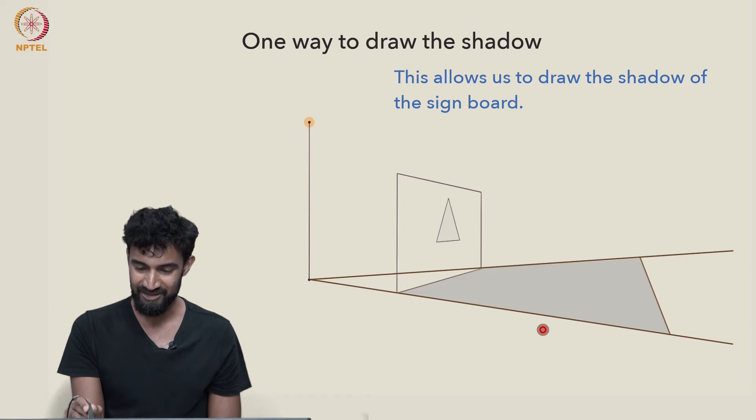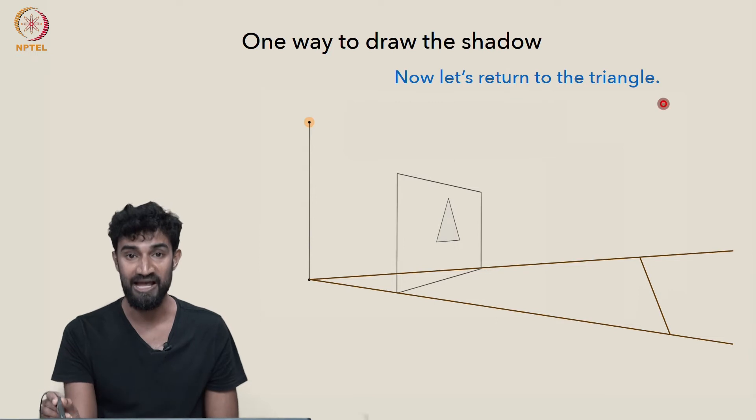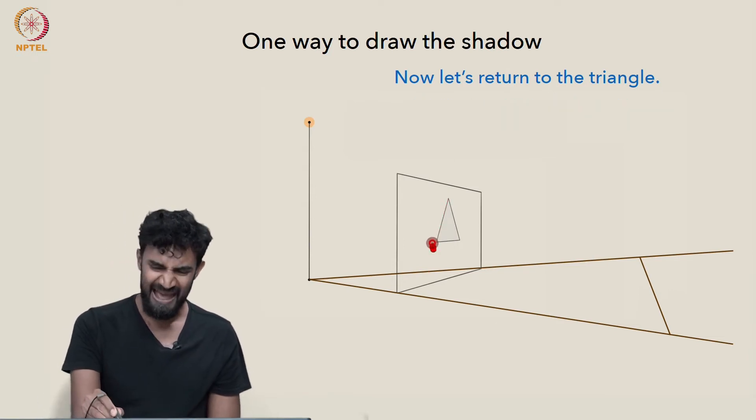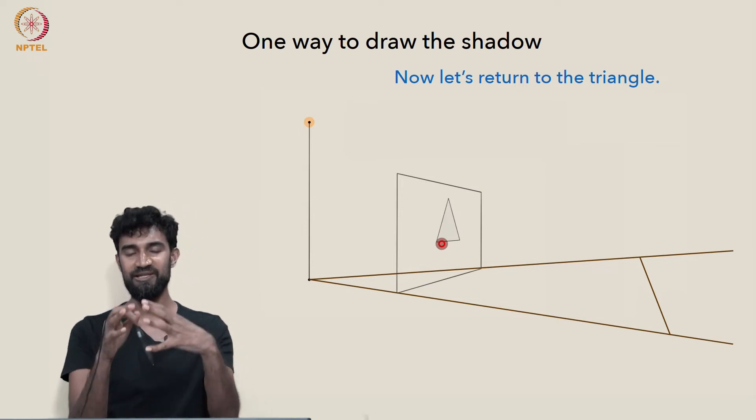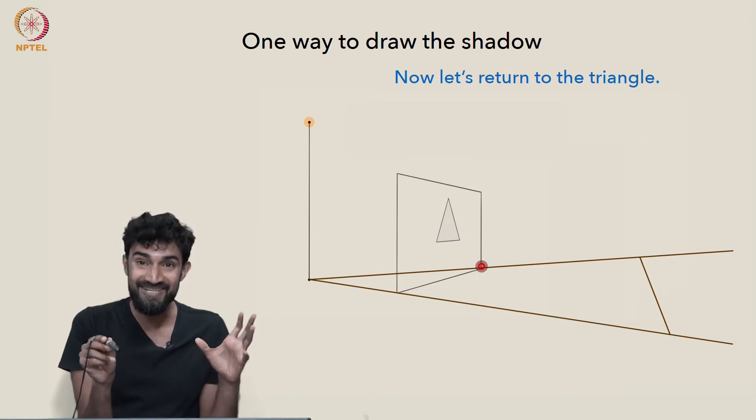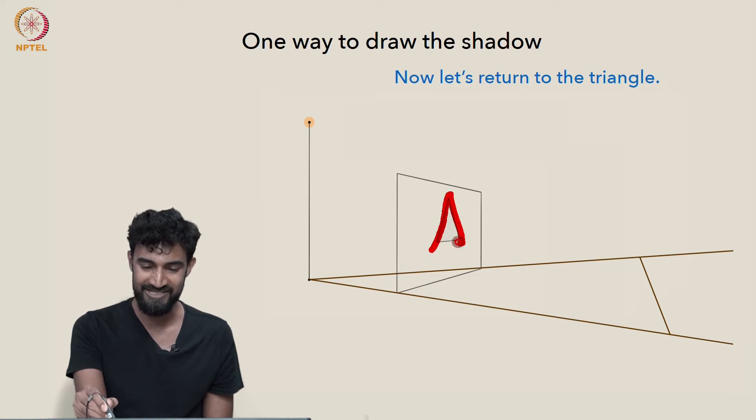But, I'll erase it now so that we have a little more space for what we're going to do next, which is return to the triangle. Now, as it is, the triangle is kind of floating in the middle of this sign board. It's not touching or connected to anything else. We don't have any incidence relations that we can observe easily since we're only seeing the segments of this triangle.